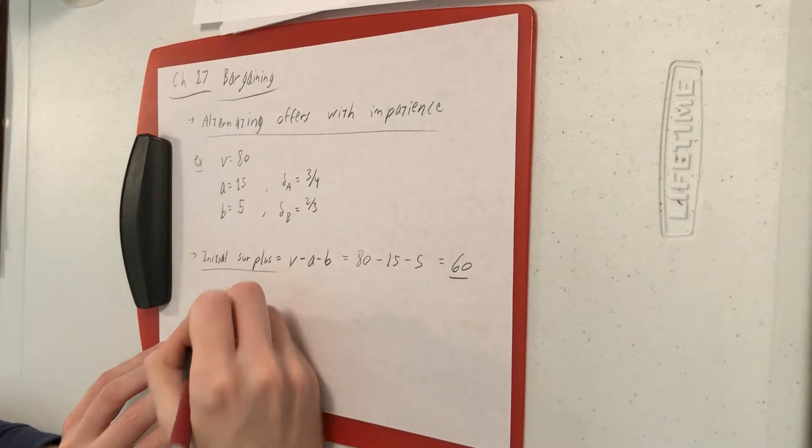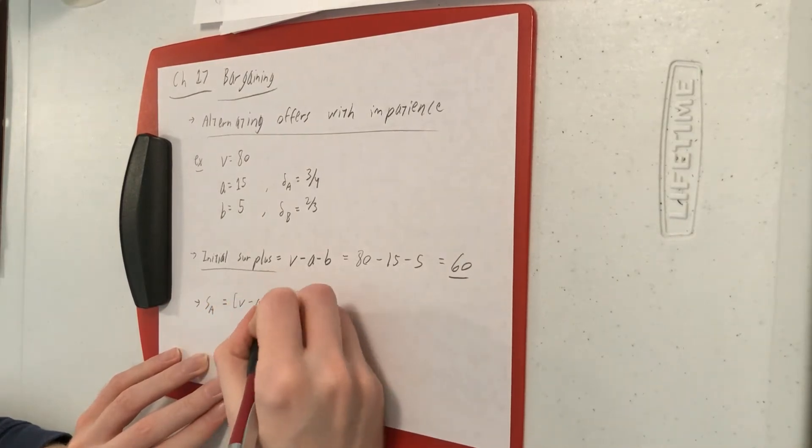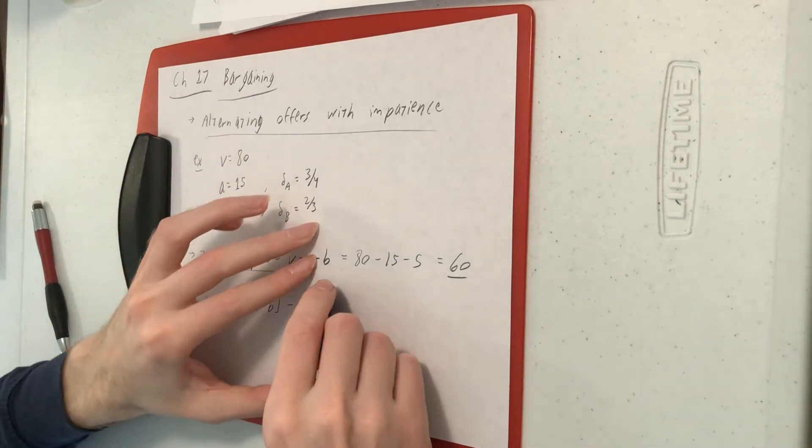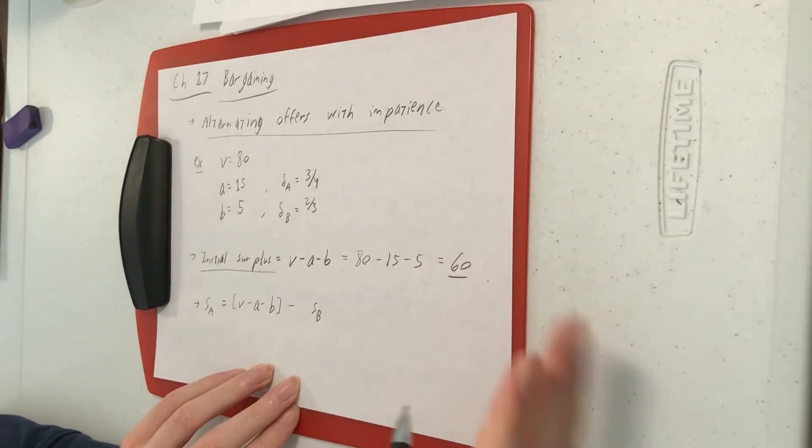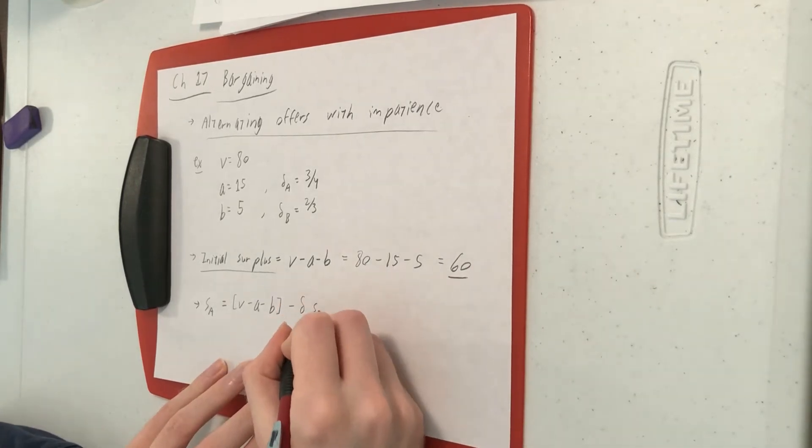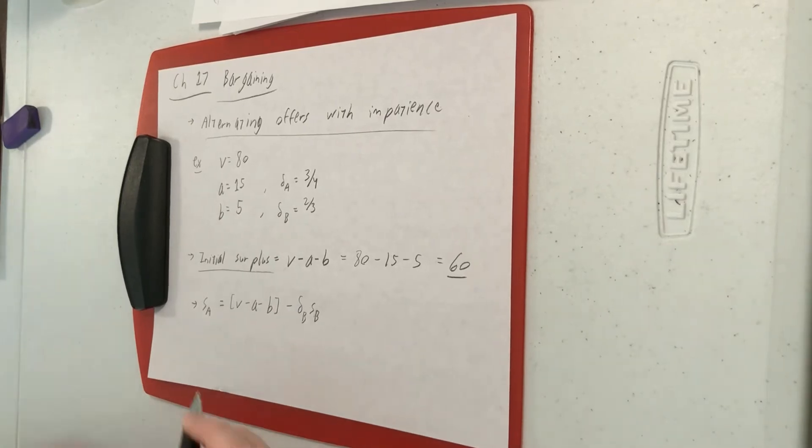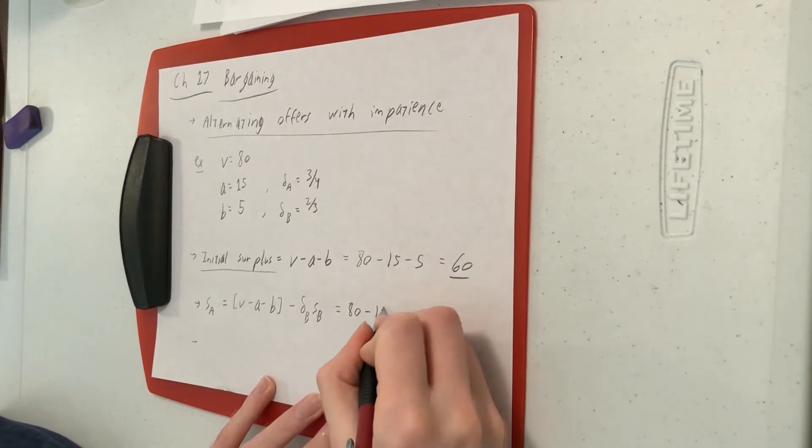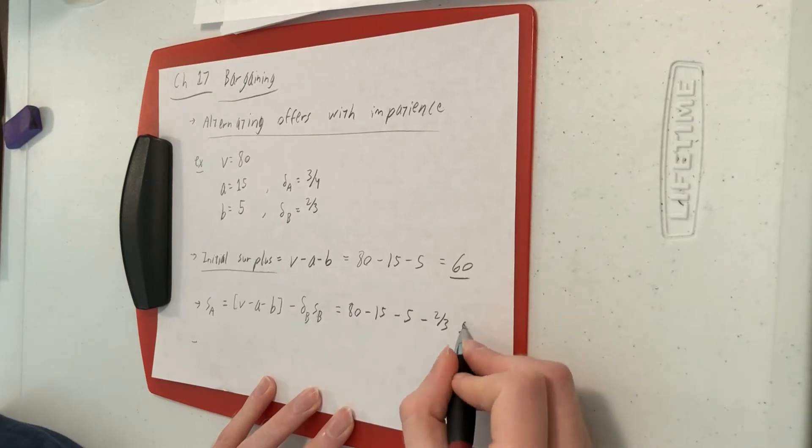We're going to find SA to be the share of the surplus A can guarantee themselves. That's going to be the initial surplus minus what you give to B. B can guarantee themselves SB in the next round, but the next round is in the future. We discount the future because we want to have stuff now. So we discount by Delta B. You offer them Delta B times SB. So they get what they need and the rest we keep for ourselves. Now, in this case, we have some numbers. So that boils down to V was 80 and A was 15 and B was 5, and Delta B was 2 thirds. And we don't know what SB is yet, we got to solve for SB. So that comes out to 60 minus 2 thirds SB.